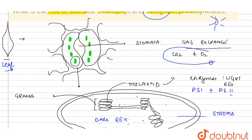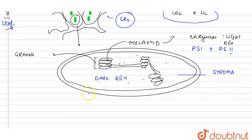As soon as the stomata opens, it results in the exchange of carbon dioxide and oxygen. The plant absorbs carbon dioxide from the atmosphere, and this carbon dioxide is used in the formation of glucose. Once absorbed, it reaches the chloroplast.